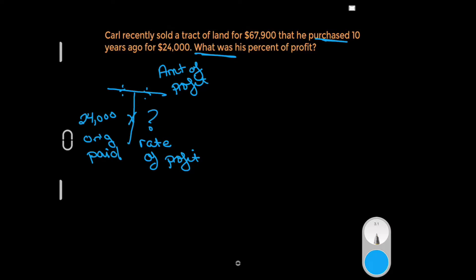Now we need to find the amount of profit. Well, he sold it recently for $67,900, but he paid $24,000 for it, so the difference is his profit. That's the money he made. It was a pretty good investment here, and that's going to be $43,900. That is our profit, so we put it right here—$43,900. Now we have two out of three.